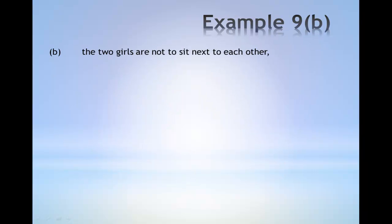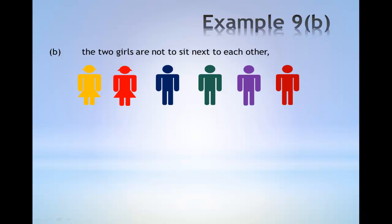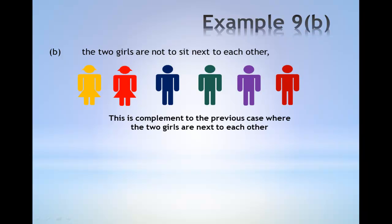Example 9b: the number of ways the two girls are not to sit next to each other. For the two girls to be not sitting next to each other, this is the complement to the previous case where the two girls are next to each other.